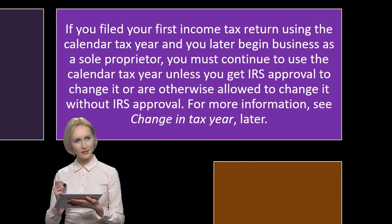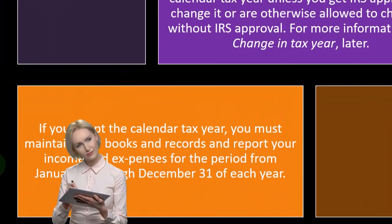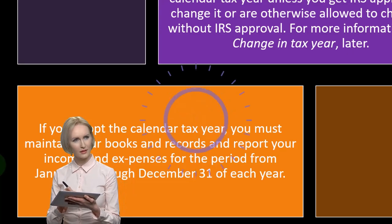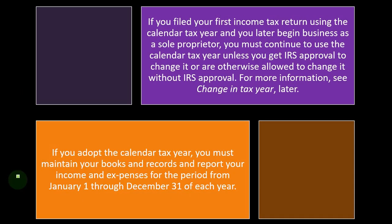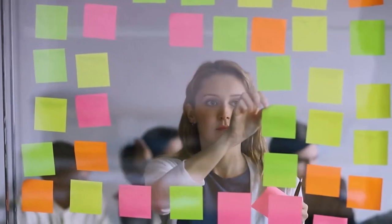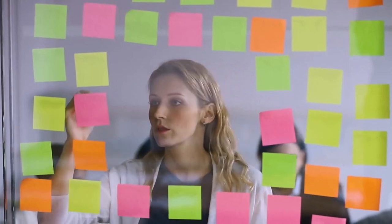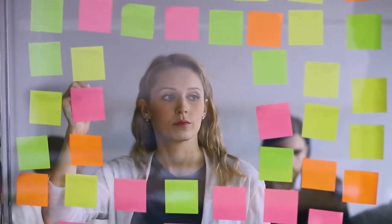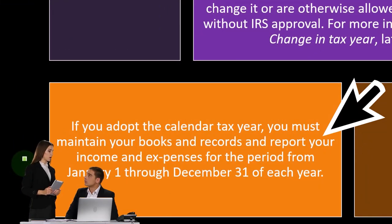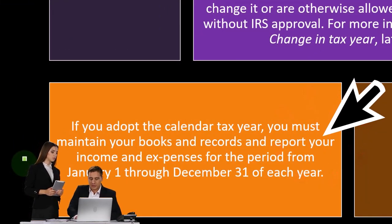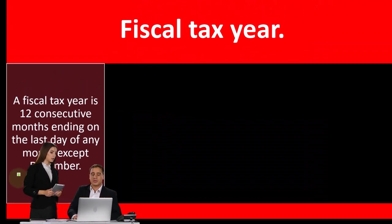For more information, see 'change in tax year.' You want to get off to the right start the way you want to go forward. Plan that out because it's more difficult to change it — not impossible, but you have to have rationale to change it. You've got to go through a process to change it because the IRS wants consistency, so people aren't cheating by adjusting cutoff dates by changing years and methods. If you adopt the calendar year, you must maintain your books and records and report your income and expenses for the period from January 1st through December 31st of the year.